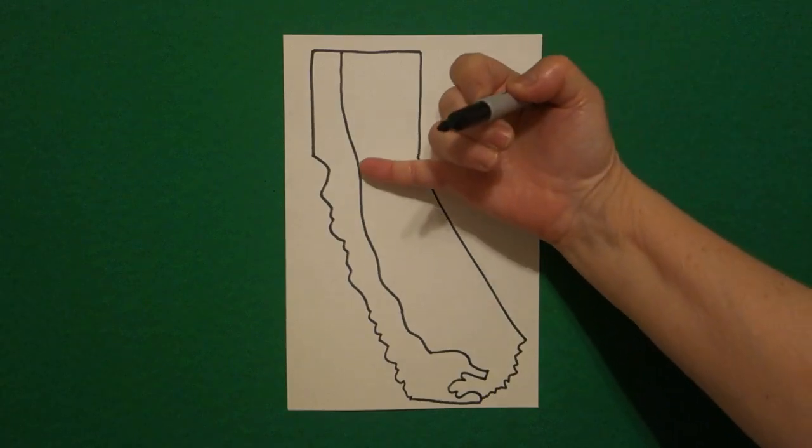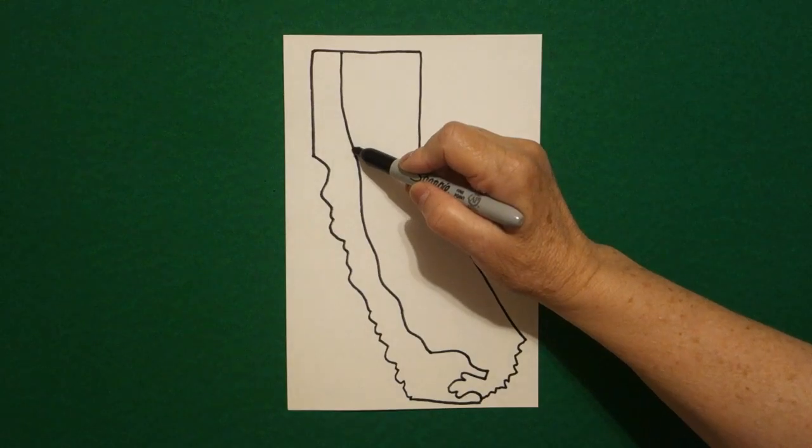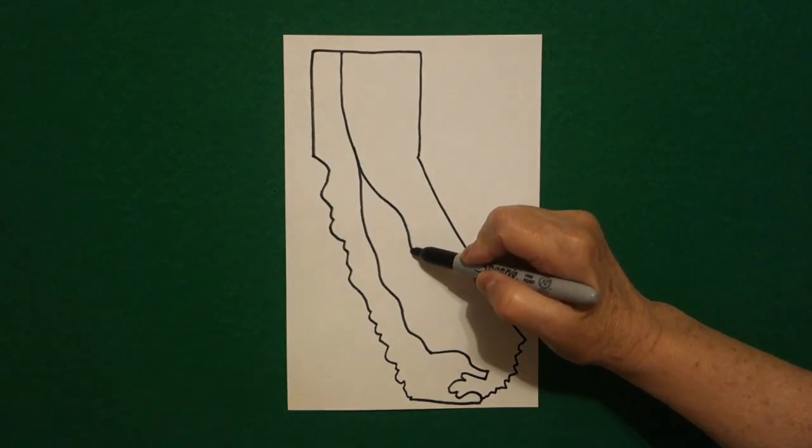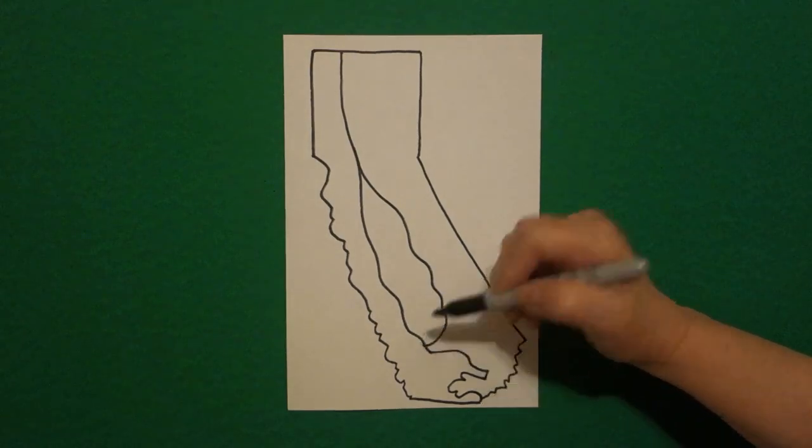Now I come right about midpoint right here, and I'm going to draw a curve line out, keep going, in, out, and connect right there.